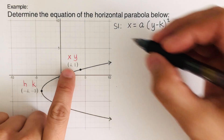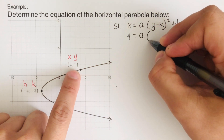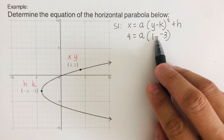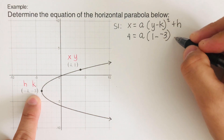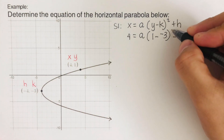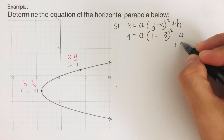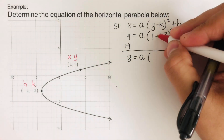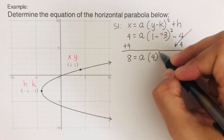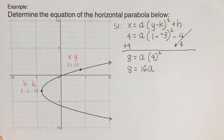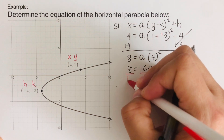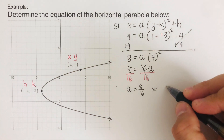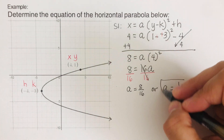We plug the values in: x is 4, y is 1, k is negative 3. So the equation becomes 4 equals a times (1 minus negative 3) squared plus h, where h is negative 4. Adding 4 to both sides gives 8 equals a times (1 plus 3) squared, which is 4 squared equals 16. So 8 equals 16a. Dividing both sides by 16 gives a equals 8 over 16, which reduces to a equals 1/2.